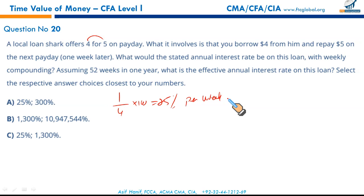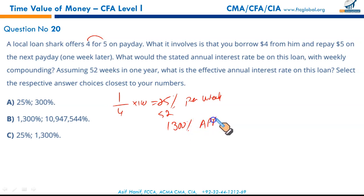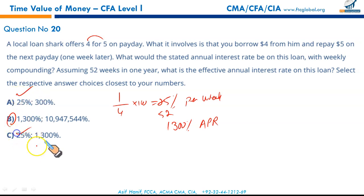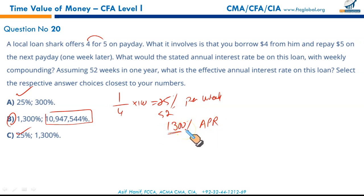25% per week is very high. 25 × 52 = 1,300% annual percentage rate. Look no further, click B and move on. But if 1,300% appears in multiple answer choices, confirm it. Now we need to convert this APR of 1,300% into an effective annual rate — and the result will frighten you.